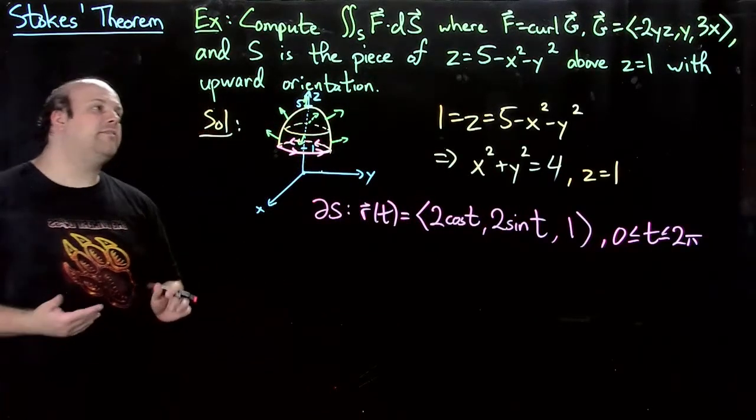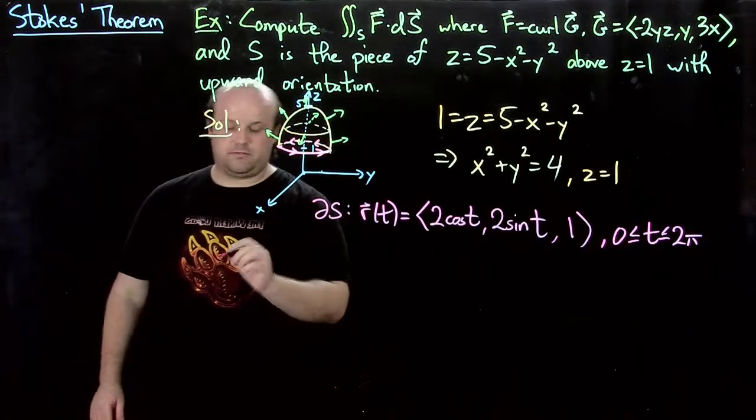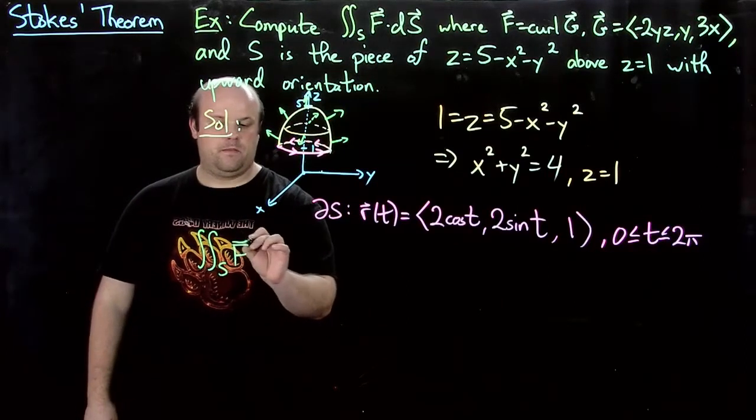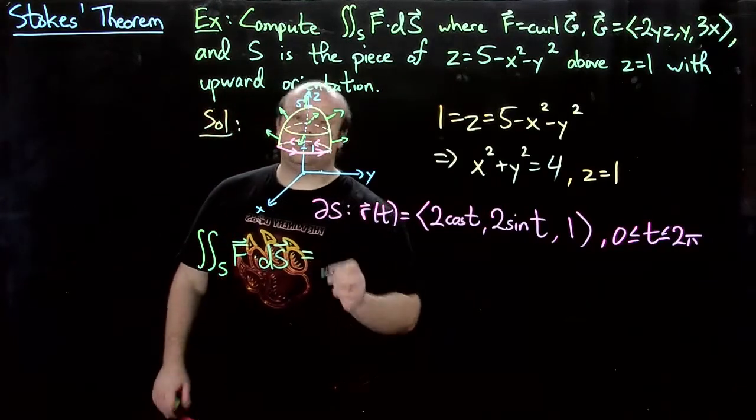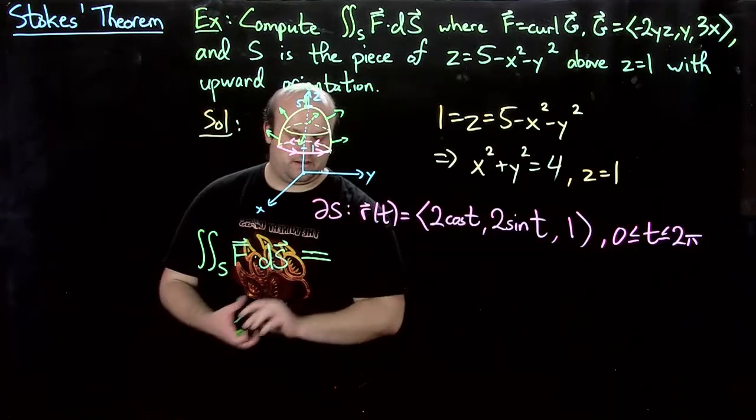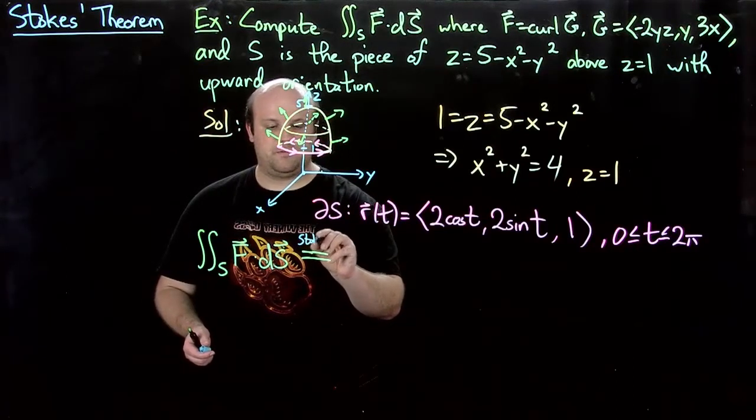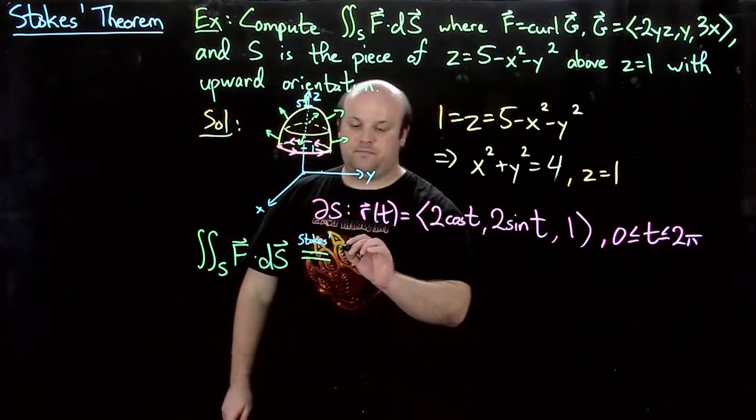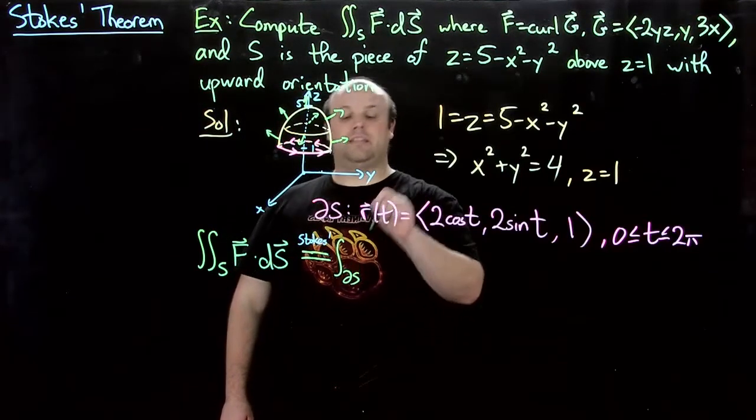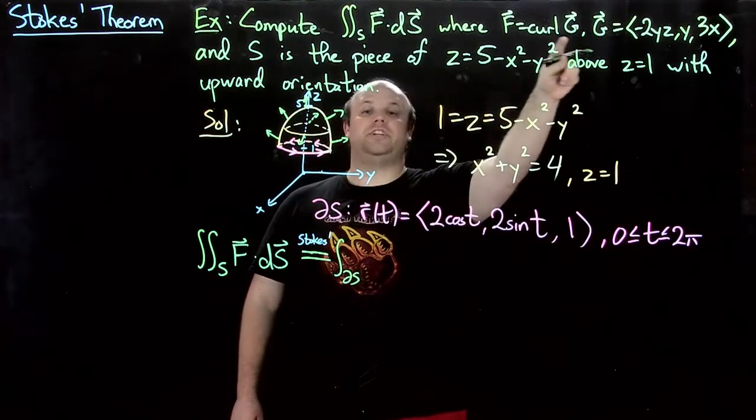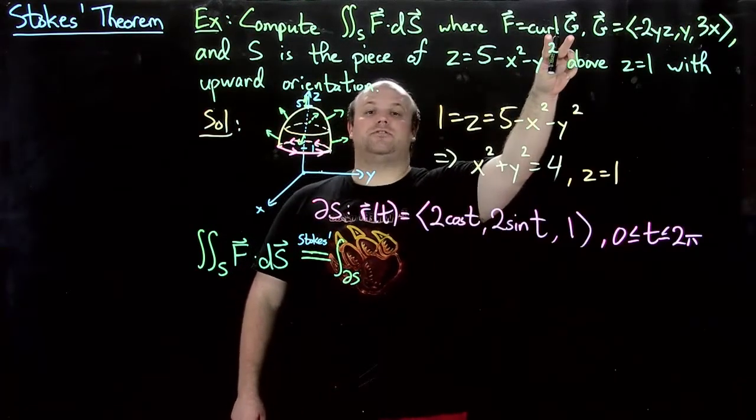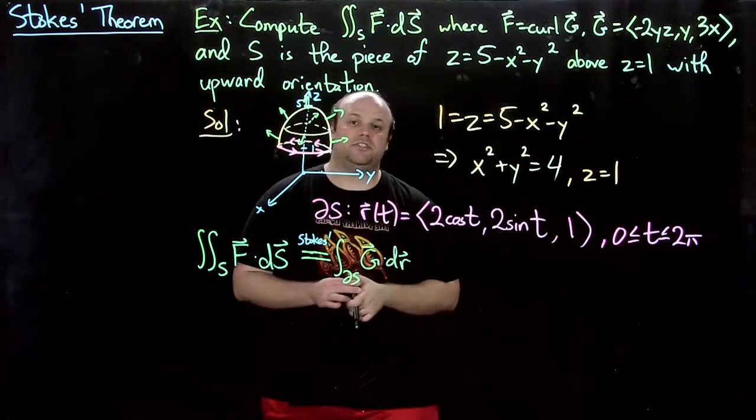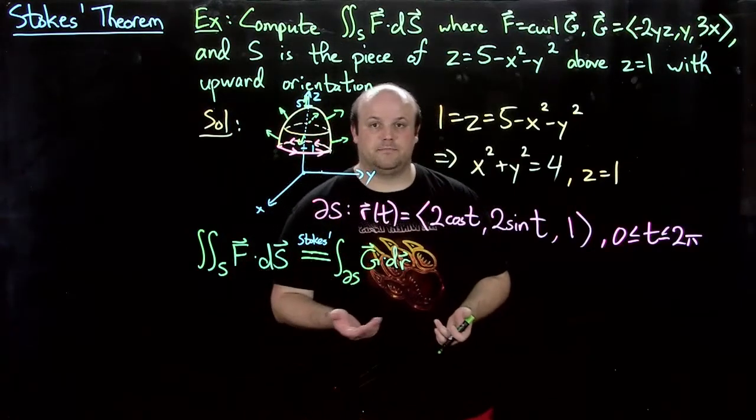And then now, what we have is this integral that we wanted to compute originally. We've reduced this using Stokes theorem. Let me write up here, just a little reminder, this was Stokes theorem. That gives us the integral over the boundary of S. Now F, remember, F is the curl of G. And Stokes theorem takes this curl G and turns it into just G, dr. Now we're down to just a regular line integral, or a work integral.